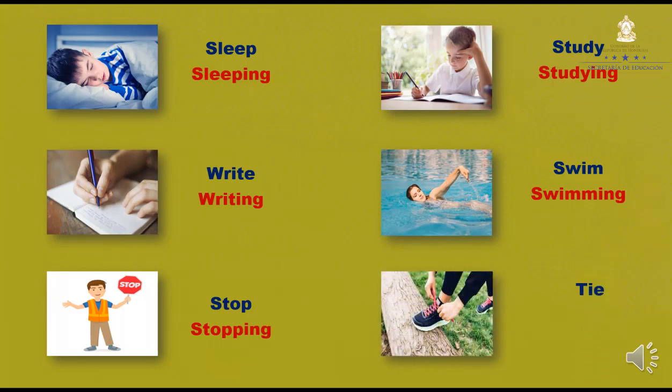And the last one: Tie. ¿Qué sucede con estos verbos que terminan en ie, específicamente en esas dos vocales? Esa ie se convierte en ye y luego le agregamos -ing. Observen, tie cambió por tying. La ie cambió por ye y luego le agregamos -ing.